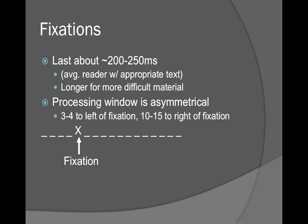If you are reading a language that reads right to left, you see the same window but reversed, because of the way the eyes have been trained to move. So asymmetrical windows exist even when the language is read up and down or right to left.